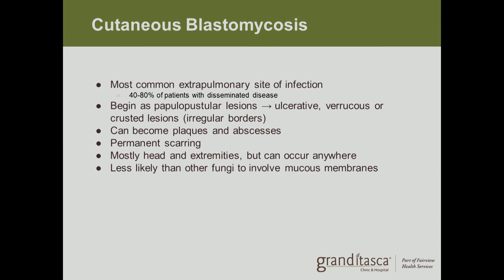Cutaneous blastomycosis is the next most common extra-pulmonary site of infection after the lungs. Forty to eighty percent of patients with disseminated disease will have cutaneous blastomycosis. It begins as a papular pustular lesion — ulcerative or crusted in appearance with irregular borders — and can become a plaque or abscess, leading to permanent scarring. It is mostly found on the head and extremities but can occur anywhere, and is less likely than other fungi to involve the mucous membranes such as the lips or nose.